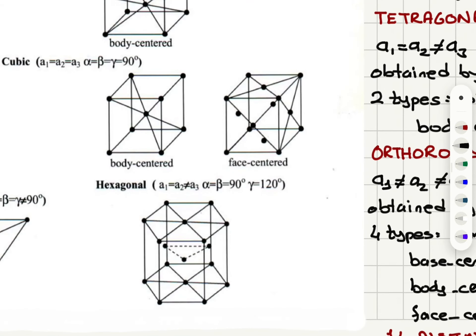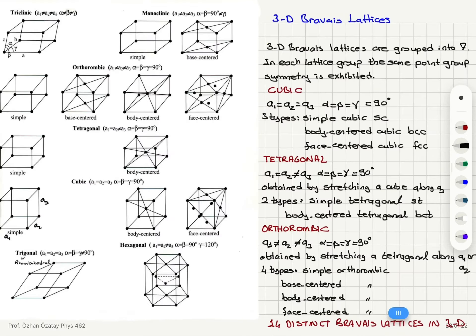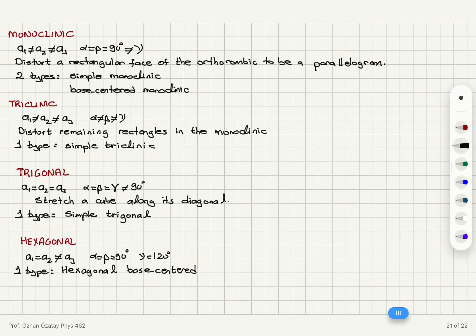As you can see, we have points at the corners and at the base centers as well, and also three points in the middle plane. We will talk about this hexagonal structure in more detail later.